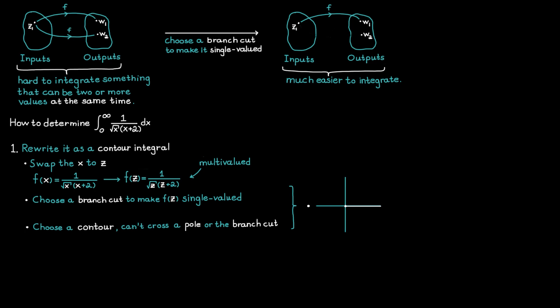And then we can make the contour look something like this. This contour is called a keyhole contour. It consists of two circles, a small one with radius r and a larger one with radius capital R. And then we connect these two circles with two parallel lines, one at each side of the branch cut. By using this setup, we have managed to avoid the two poles, the one at 0 and the one at minus 2. Note that there are actually multiple setups that work for our case here.